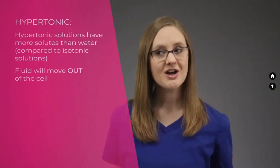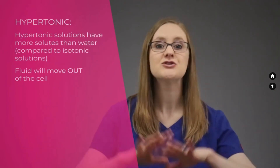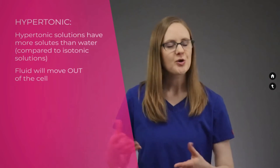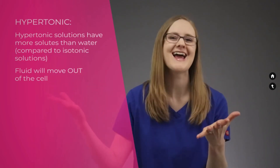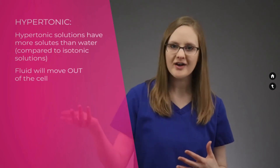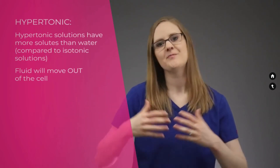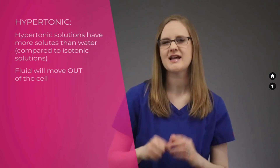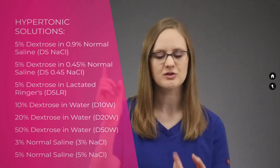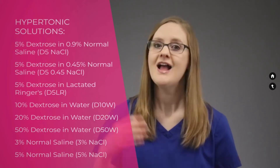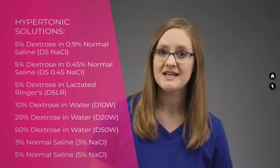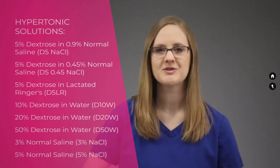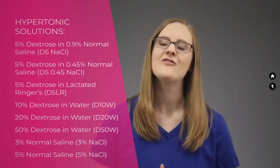The opposite of a hypotonic IV solution is hypertonic IV solutions. Hypertonic IV solutions are filled with solutes — they have so many solutes compared to the water inside. When that super-concentrated solution comes into contact with a cell, the cell gives away its water and shrinks. There are many hypertonic IV solutions, including 5% dextrose in 0.9% normal saline, 5% dextrose in 0.45% normal saline, 5% dextrose in lactated Ringer's, 10% dextrose in water, 20% dextrose in water, 50% dextrose in water, 3% saline, and 5% saline.